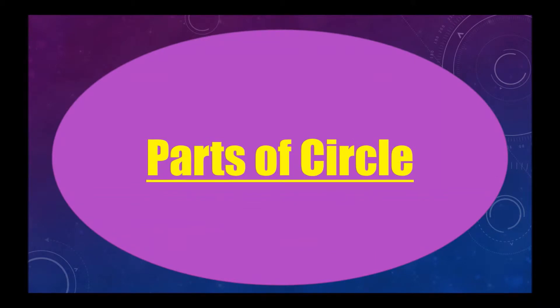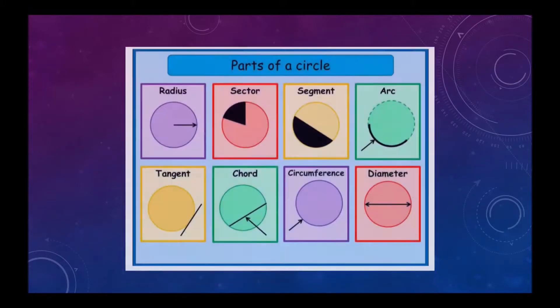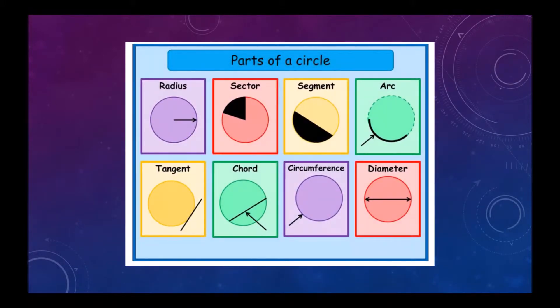Hello students, today we will learn something about parts of a circle. These are the parts of a circle: radius, sector, segment, arc, tangent, chord, circumference, diameter, and many more. Let's see them in detail.